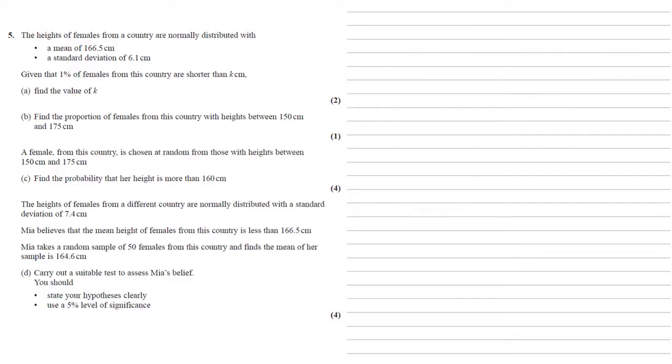The heights of females from a different country are normally distributed with a standard deviation of 7.4 centimeters. Mia believes that the mean height of females from this country is less than 166.5 centimeters. Mia takes a random sample of 50 females from this country and finds the mean of her sample is 164.6 centimeters. For part D, we need to carry out a suitable test to assess Mia's belief, making sure we state our hypotheses clearly and we're going to use a 5% level of significance.